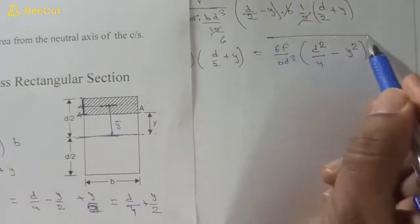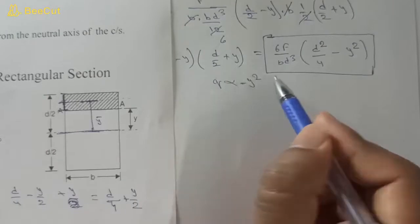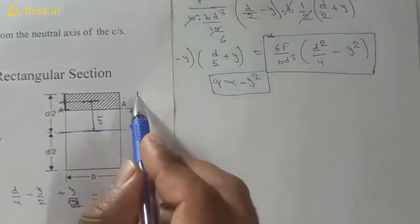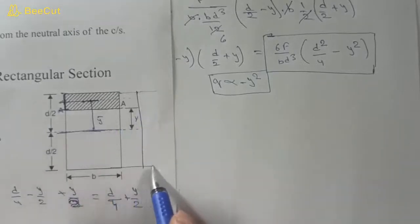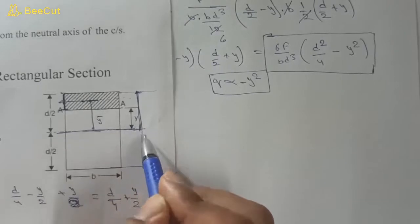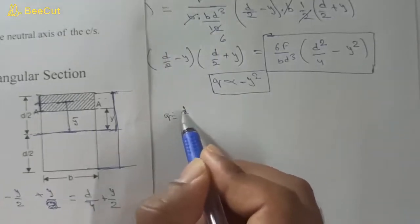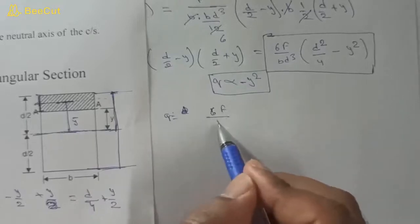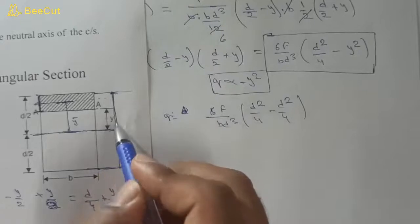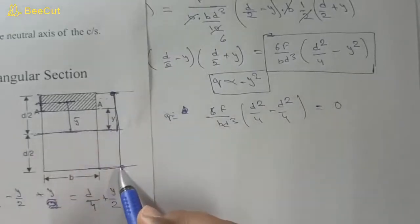This formula shows that shear stress τ is proportional to (D²/4 − Y²), which is a parabolic equation in Y. Therefore, shear stress varies parabolically across the cross section. At the extreme ends, Y = D/2, so τ = 6F/(BD³) · (D²/4 − D²/4) = 0. Thus, shear stress is zero at the top and bottom surfaces of the beam.